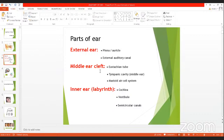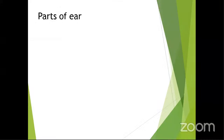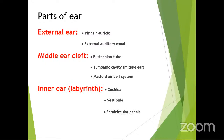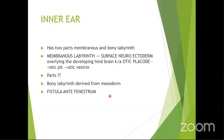The external ear consists of the pinna or auricle and the external auditory canal, all lateral to the tympanic membrane. The middle ear cleft is a very important topic for undergraduates — especially otosclerosis, where excessive bone formation occurs over the oval window, causing fixation of the stapes and conductive hearing loss.